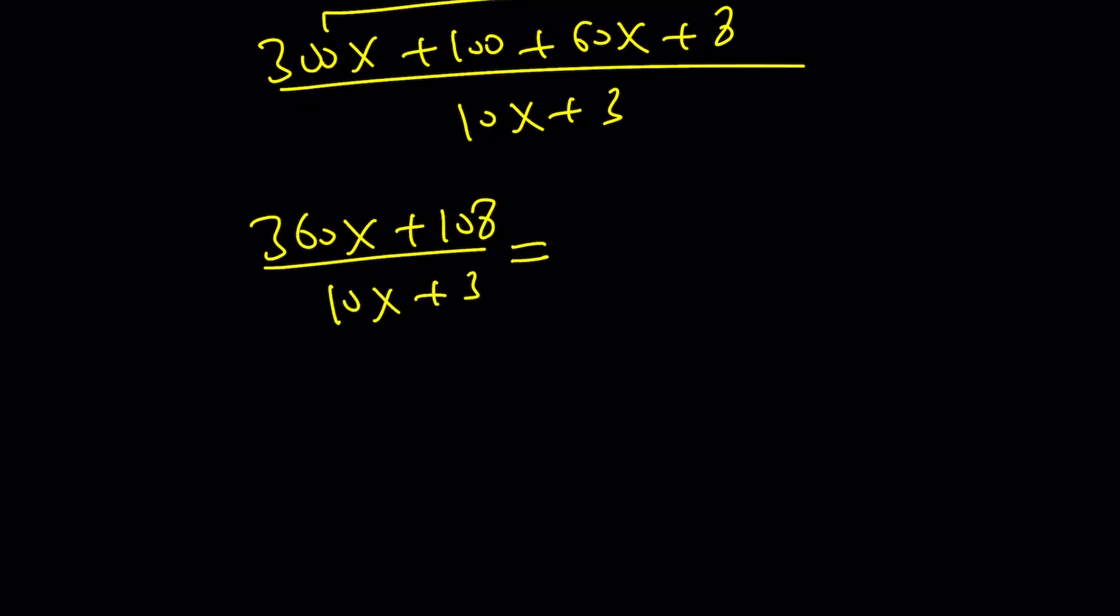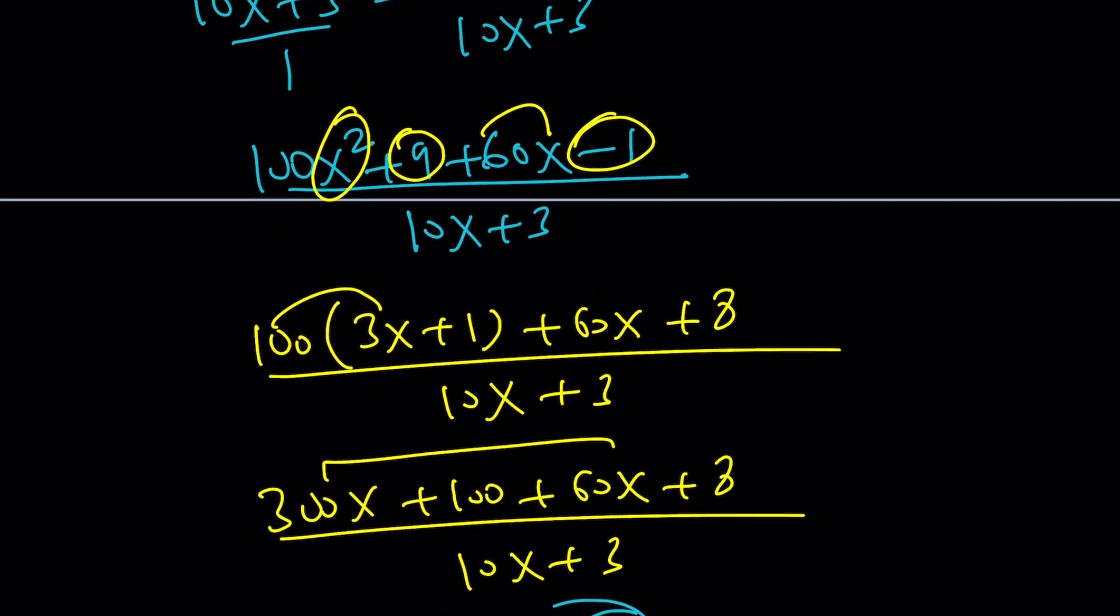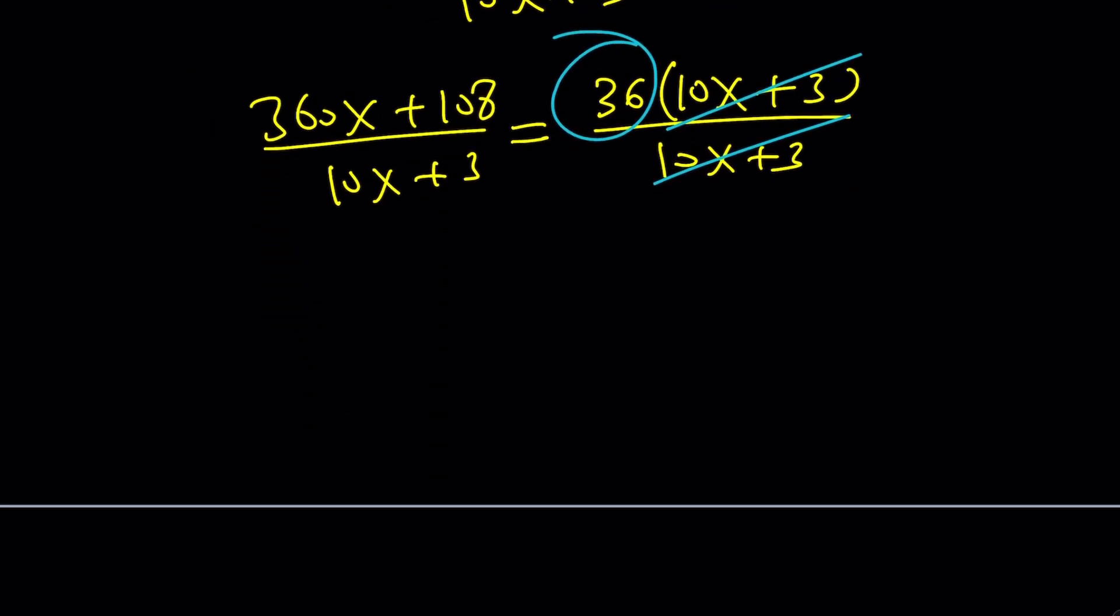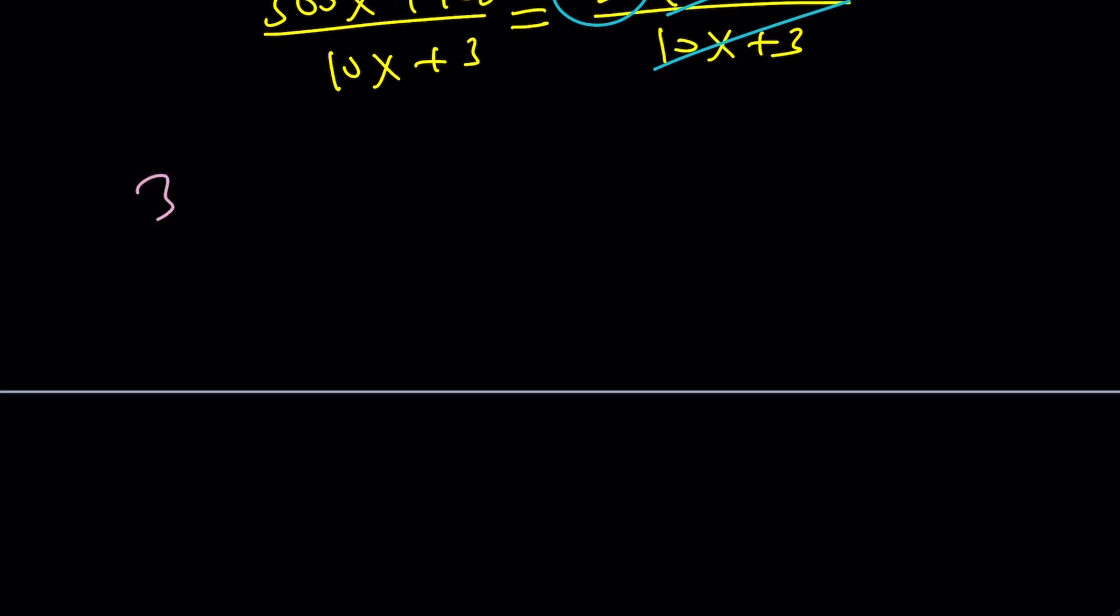If you look at this very carefully, hopefully you're going to realize that we can take out a 36 as a common factor. And that gives us 10x plus 3 divided by 10x plus 3. And what does that tell you? Cancel that out. Cross it out. And you end up with 36 as the answer. And that's the same thing that we got before. So, I can probably quickly talk about method 3 because this is just awesome.